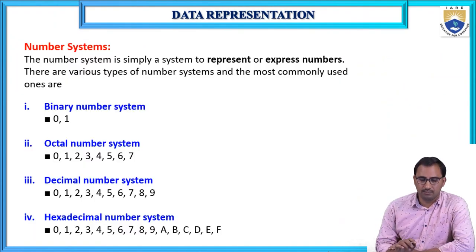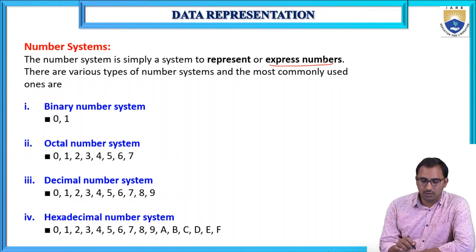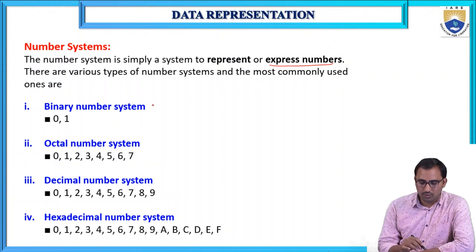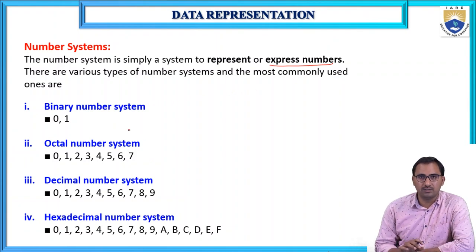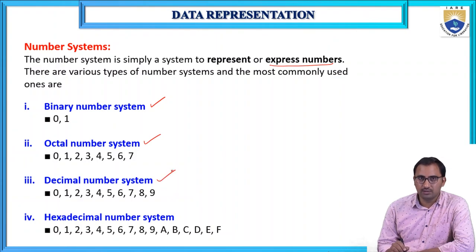There are various types of number systems, and the most commonly used ones are four types: the binary number system, the octal number system, the decimal number system, and the hexadecimal number system.